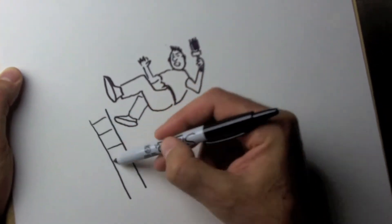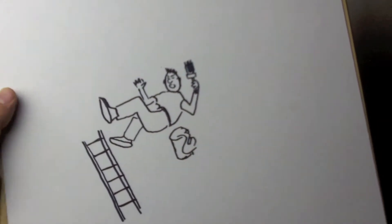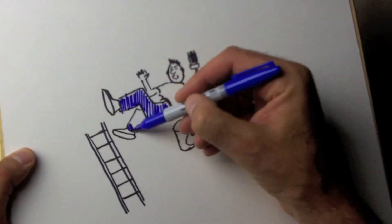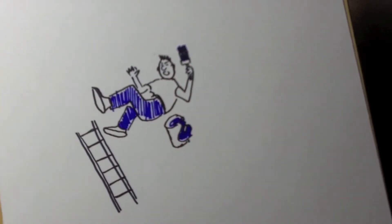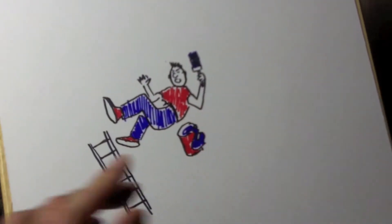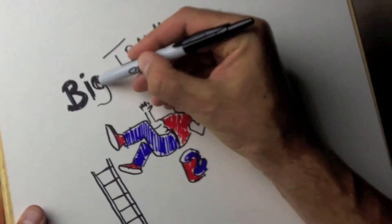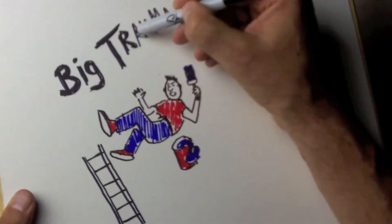In this drawing here you can see a guy falling off a ladder, but I could have drawn pictures of football injuries or car accidents or anything else big. So basically, that's what we call macro trauma or big trauma, as you can see here.